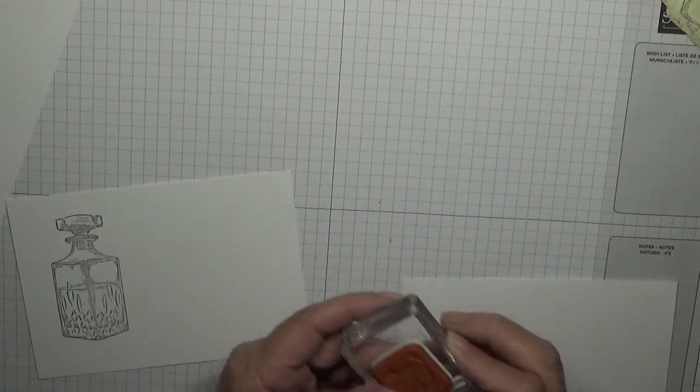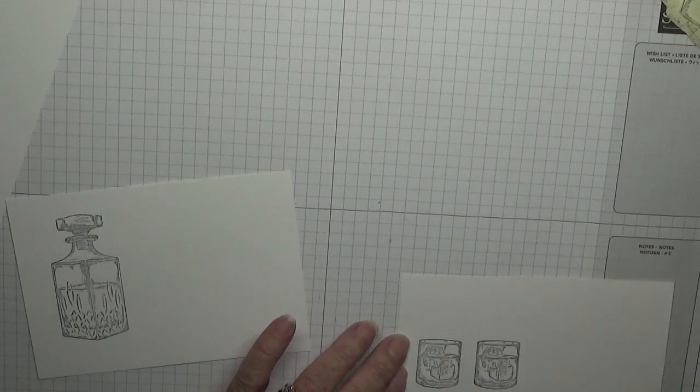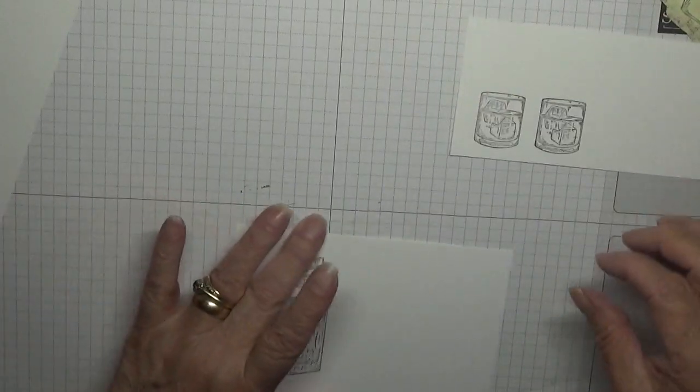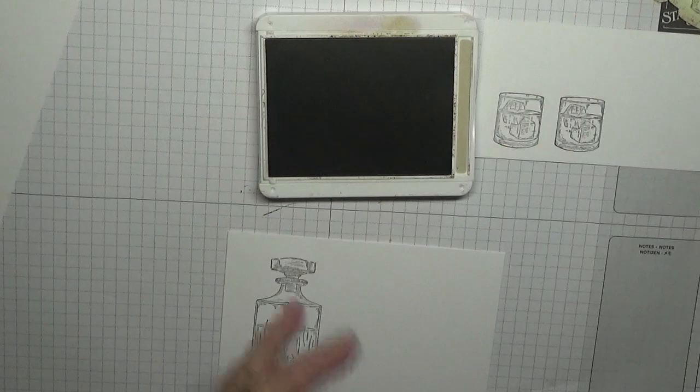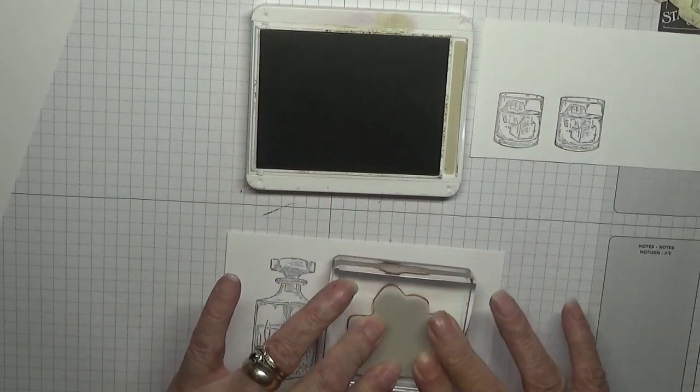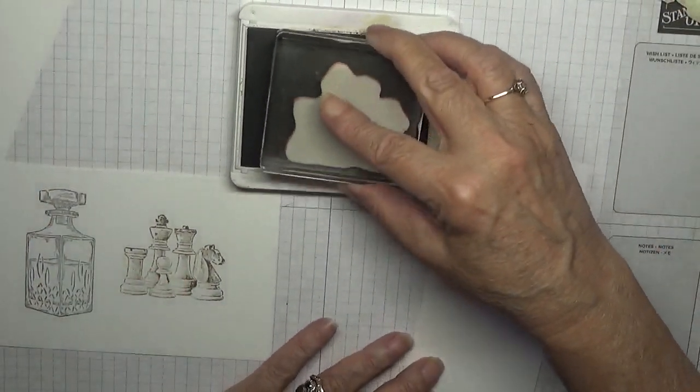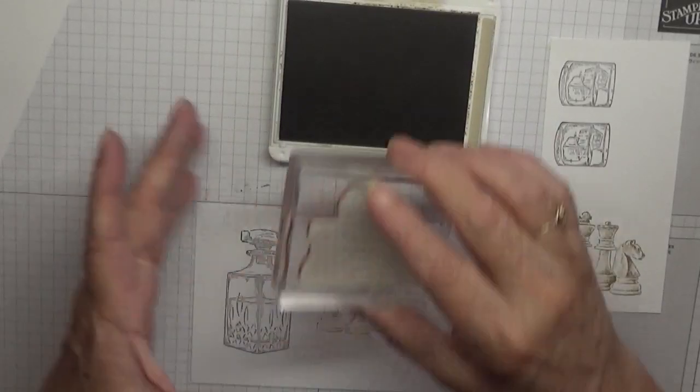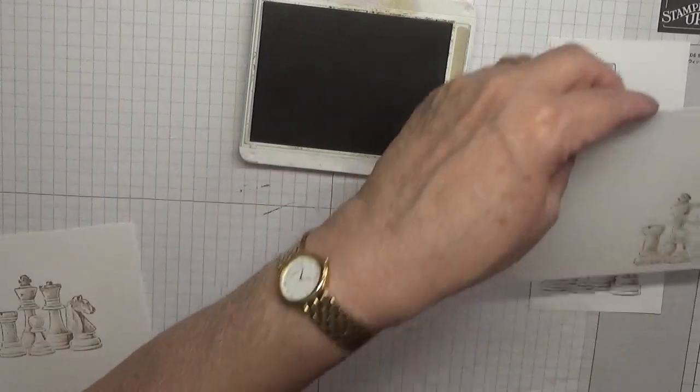I also need to stamp on one of the scraps the two glasses because we're going to cut these out. One, two, and that's just finished with the black ink. Now we want Crumb Cake and the chess pieces. Ink them up and we're going to pop these just there like that. I think they stamp lovely. We need two of these. Stamp off another one so we've got two of them we're going to cut out.